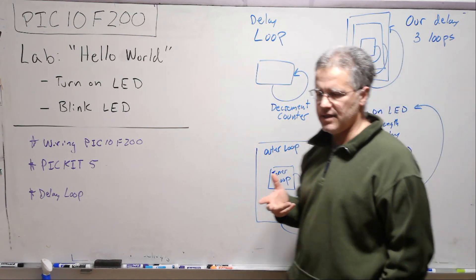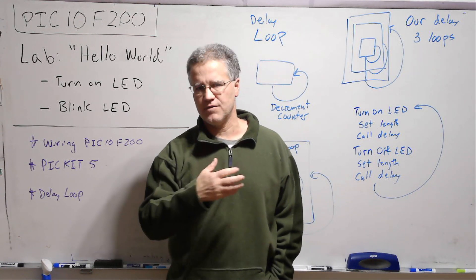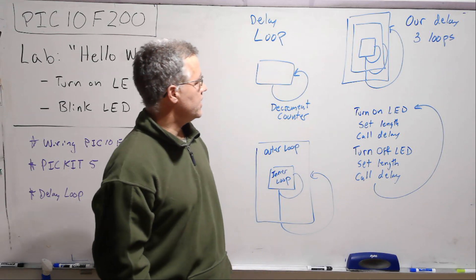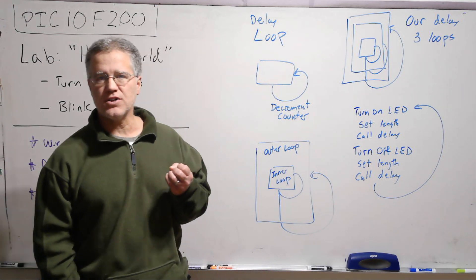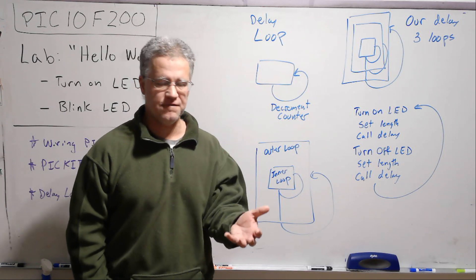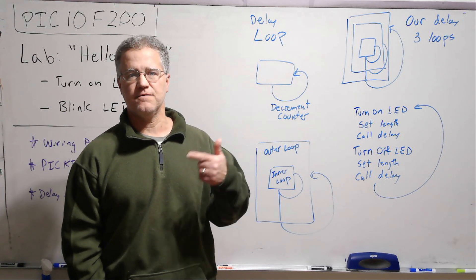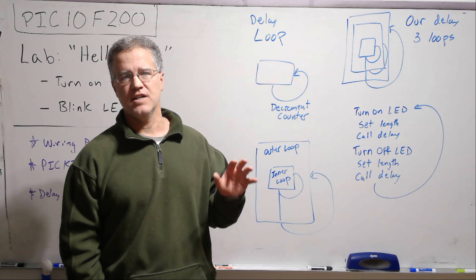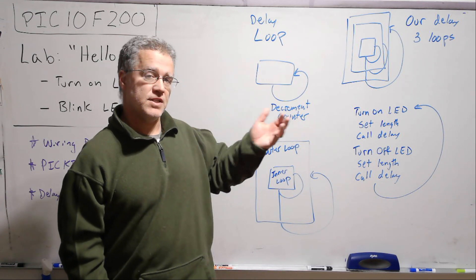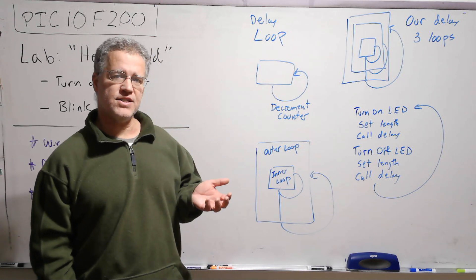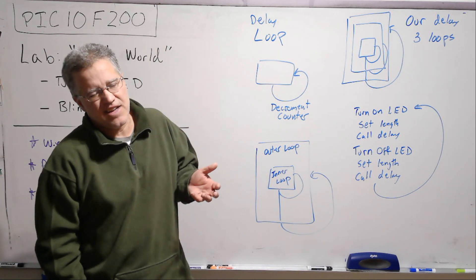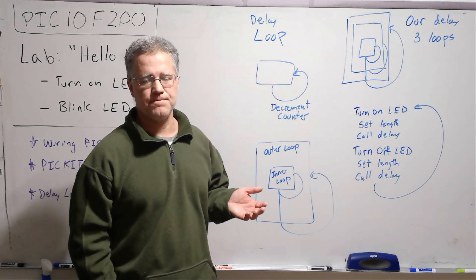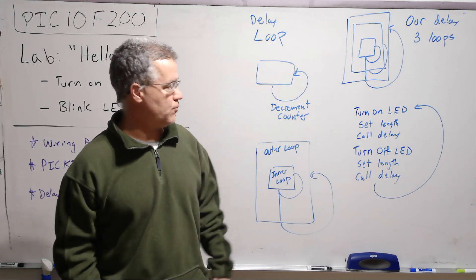The way I've set up these loops for all our PIC10F200 work is that the loops are symmetric — I send in one value like 50, meaning each loop will complete 50 cycles. Another approach is to have the inner loops always be 255 and control the outer loop, but the symmetric approach adds versatility. We'll be able to copy and paste this across all our experiments, so it's very portable.